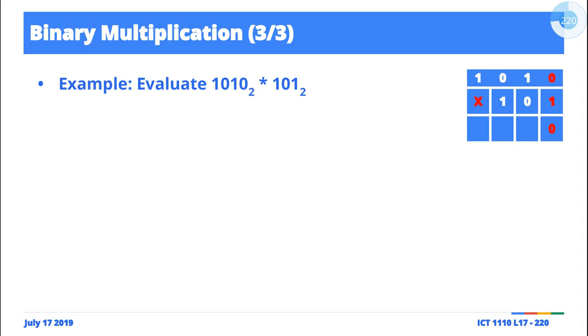So one times zero is going to be zero, and then one times one is going to give us a one. One times zero is zero, one times one is one, and then we move on to the next number, right?